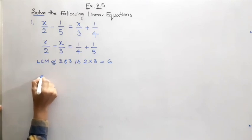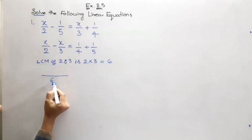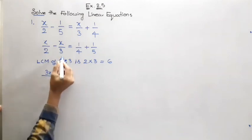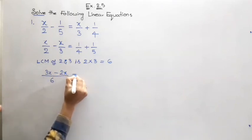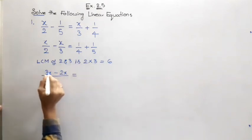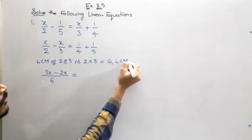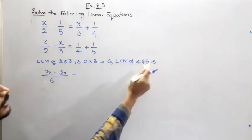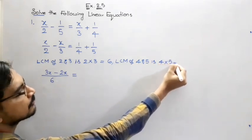So the LCM is going to be 6. 2 how many times is 6? 3 times, 3 into the numerator x, 3x minus 3 how many times is 6? 2 times, 2 into numerator x, 2x is equal to—here also better take the LCM for these two. So LCM of 4 and 5 is, these are also prime numbers, so 4 into 5 is equal to 20.